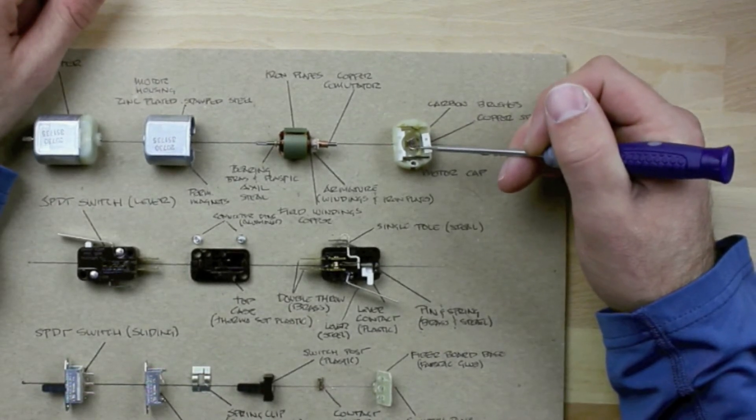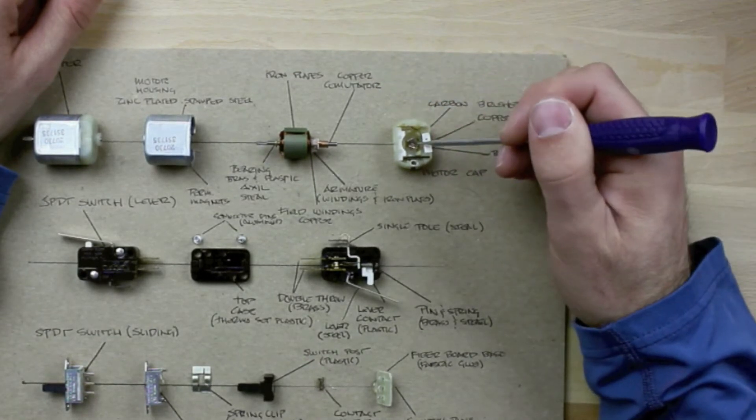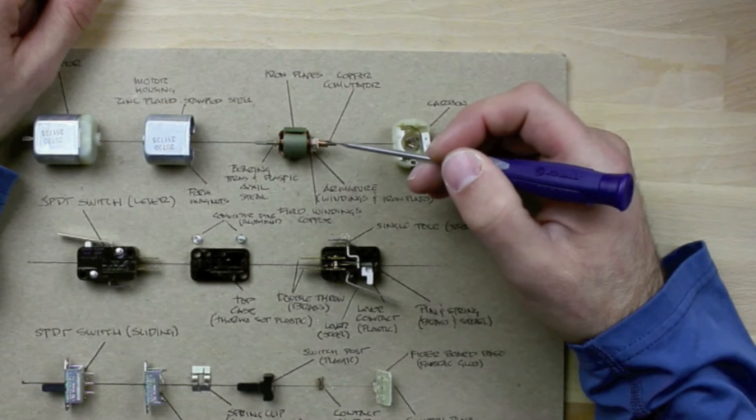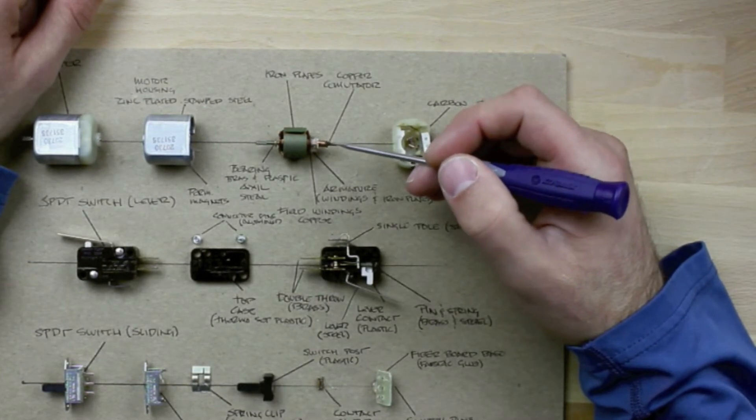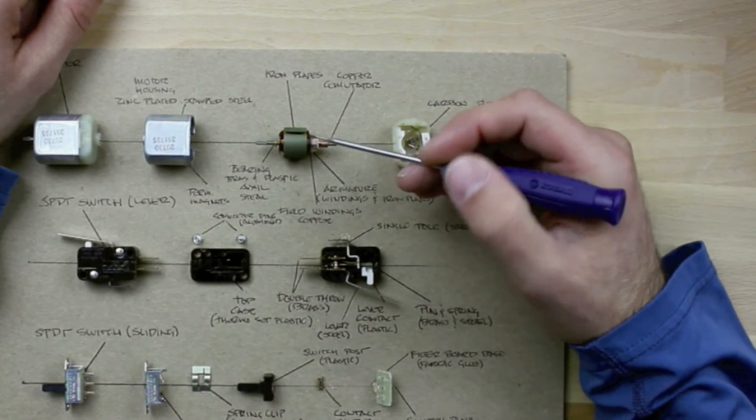Then what happens is the motor rotates. And as the motor rotates, the power exits, goes and completes the circuit. And as it does that, the field flips in the field windings in the center there. So when that field flips, it pushes against the other magnet and continues the rotation process.